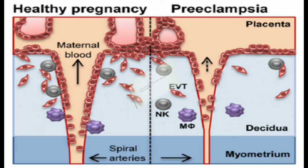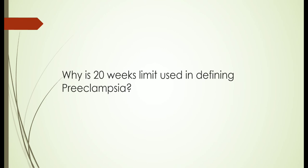Now why is the 20-week limit used in defining preeclampsia? The 20 weeks of gestation limit is used in the definition of preeclampsia perhaps because the lack of the second wave of trophoblastic invasion is recognized after its normal time of completion, which is 18 weeks.